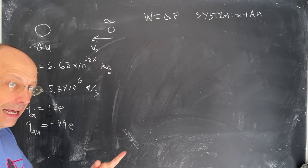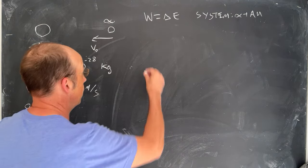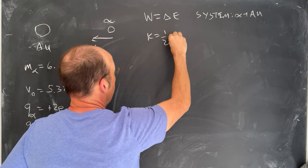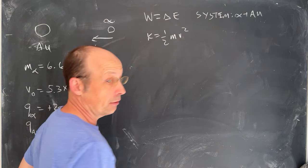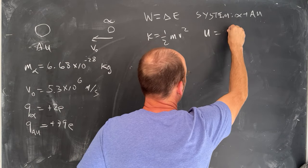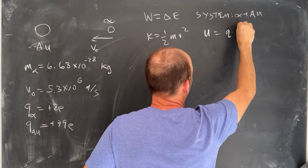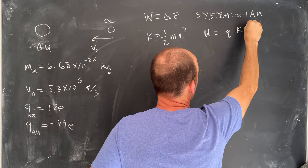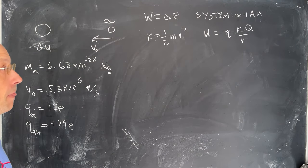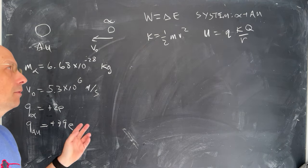So if that's my system what kinds of energy can I have? Well one I can have kinetic energy because the objects are moving and two I can have potential energy. So the kinetic energy K is one-half mv squared and then the potential energy, we'll call that just U, is going to be Q times K big Q over R. That's where we find electric potential energy. And Q is the charge of the alpha, big Q is the charge of the gold.